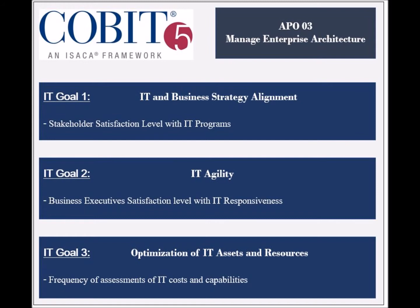The second supported goal is IT agility, and its achievement is measured by the business satisfaction level with IT responsiveness to requirements, and by the number of critical business processes supported by IT. The third goal is measured by the frequency of capability and cost assessments, and by the business satisfaction level with IT costs and capabilities.